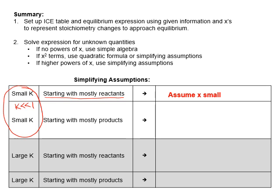However, if the k value is small and your initial position is mostly products, then you're very far from the equilibrium position, and assuming x to be small is not a good assumption. What we can do here is use stoichiometry to push the reaction back to reactants and then let it adjust forward with some changes called y. In this case, we expect that y should probably be small.